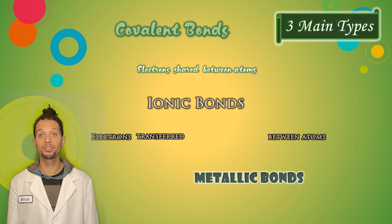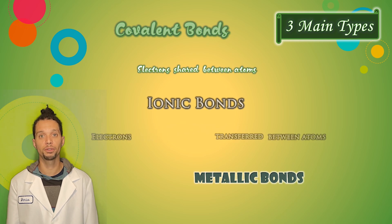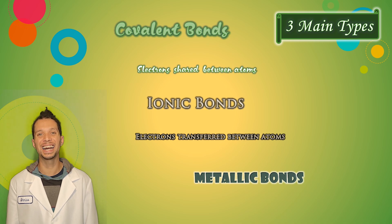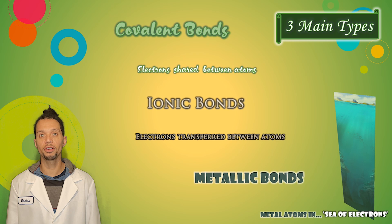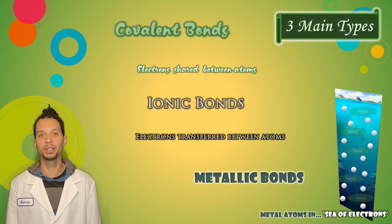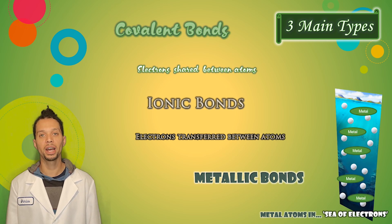When electrons are either lost or gained — in other words, they are transferred from one atom to another — those two elements are bonded together through what is called an ionic bond. When metal atoms are floating in what we call a sea of electrons, that metal atom is said to contain metallic bonds.